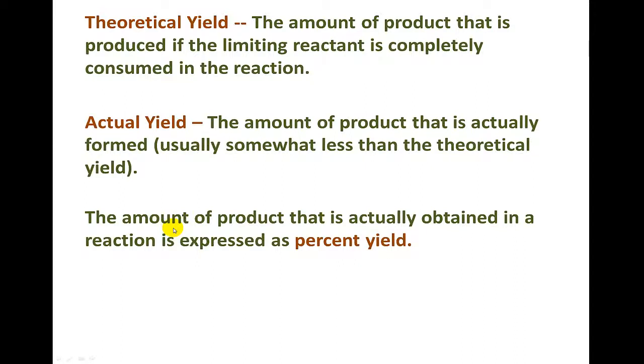So what we do is the amount of product that is actually obtained in the chemical reaction is expressed as a percent yield. And our percent yield is our actual yield in grams divided by the theoretical yield, the one we calculate, times 100.